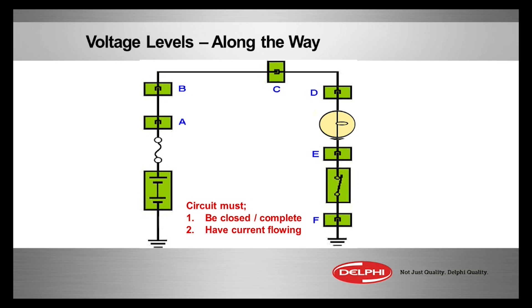Now, once you've ascertained you do have good open circuit voltage, close the circuit. Close the switch as we see here. Your load should work. Blower motor runs, fuel pump pumps, light bulb makes light.